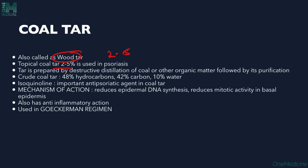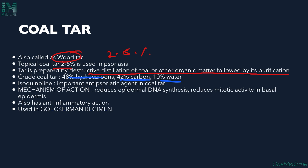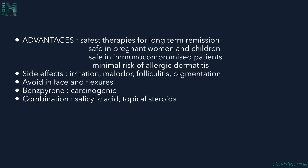Coal tar, also called wood tar, is available as 2-5% topical preparation. It is produced by destructive distillation of coal with organic matter followed by purification. Crude coal tar has 48% hydrocarbons, 42% carbon, and 10% water. Isoquinoline is the psoriatic active compound. Mechanism of action: reduces epidermal DNA synthesis, reduces mitotic activity in basal epidermis, and has anti-inflammatory action. It is used in Goeckerman's regimen. It is safe in pregnancy, immunocompromised patients. Side effects: irritation, mild odor, folliculitis. Benzpyrene is carcinogenic.